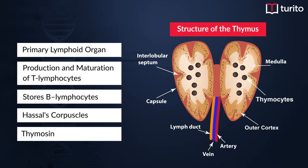The major hormone released by the thymus gland is thymosin. Once released into the bloodstream, it gives a stimulating effect on the immune system of our body. It is majorly responsible for the maturation and proliferation of T lymphocytes, hence we call the thymus gland the throne of immunity.